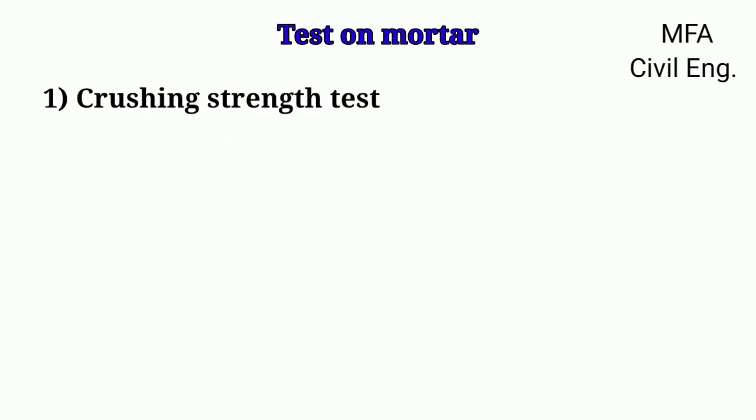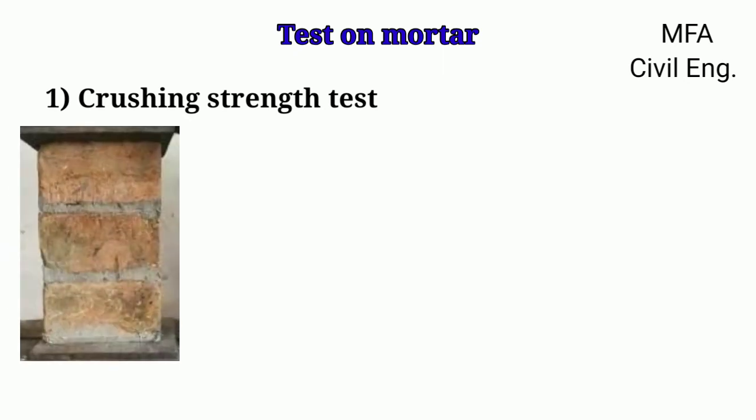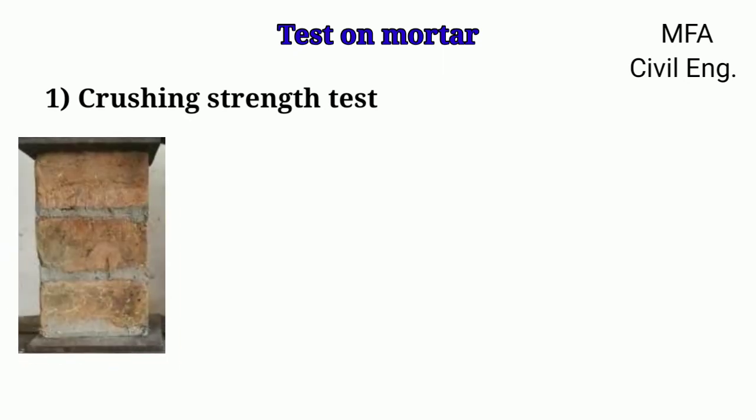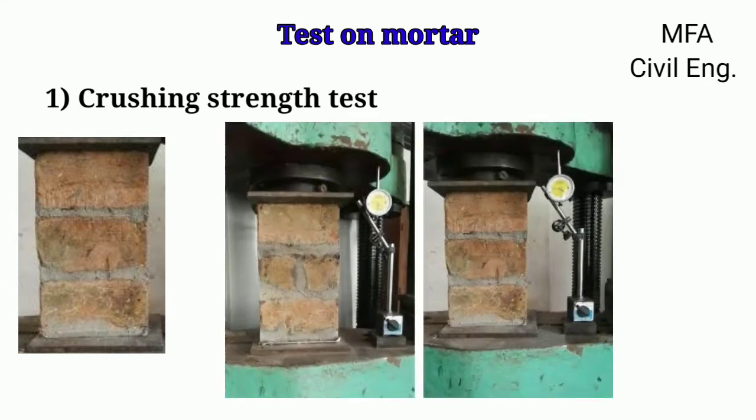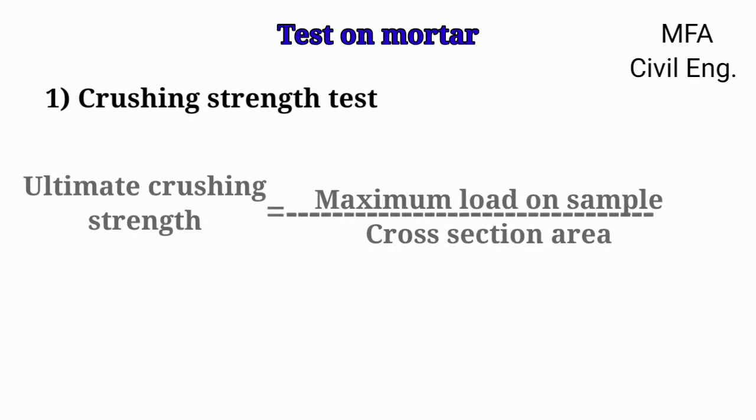In a crushing strength test, one sample of a brickwork is carried out with the mortar, then this sample of brickwork is taken and placed in a gradually loaded compression testing machine until the sample fails. It gives the ultimate crushing strength of a mortar, using the formula: ultimate crushing strength equals maximum load on the sample divided by the cross-section area of the sample.